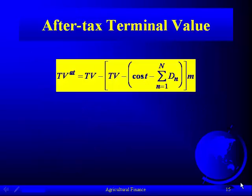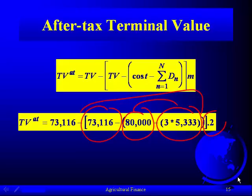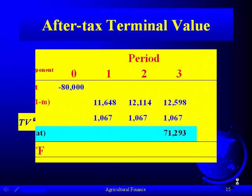We plug that into our formula — your accumulated depreciation, your initial cost to get your tax basis. We subtract it from its purchase price, multiply that capital gain or loss by the marginal tax rate, subtract it out from what we sold it for, and the after-tax terminal value is $71,293.